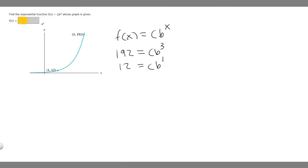192 divided by 12 equals 16. When we do elimination method, the c variables cancel because they're the same. With b^3 over b^1, if you have a variable raised to an exponent divided by the same variable raised to an exponent, you subtract the exponents. So b^3 minus b^1 equals b^2. So we know this is b^2.